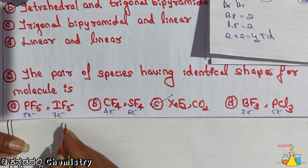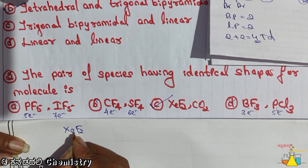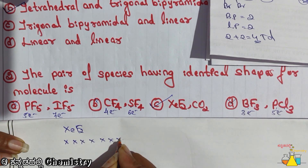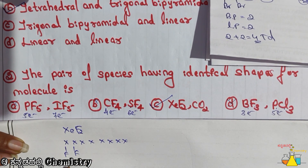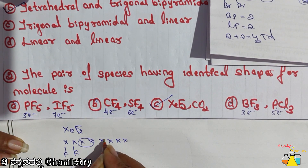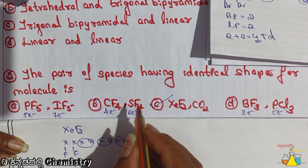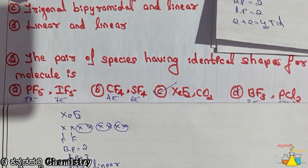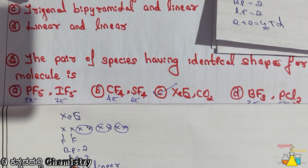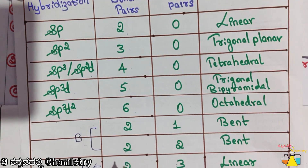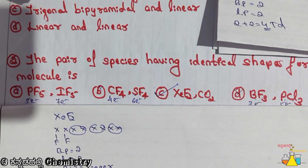XeF2: 1, 2, 3, 4, 5, 6, 7, 8. Bond pairs which is equal to 2. And lone pairs which is equal to 1, 2, 3. So 3. So 2 plus 3, and then the shape is linear. Bond pairs 2, lone pairs 3 — 2 plus 3, and then 1 shape: linear.